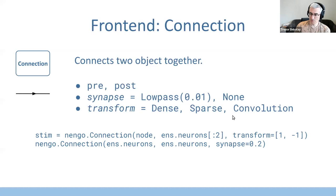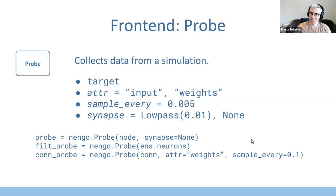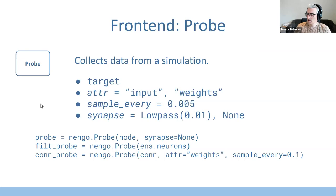You can do sparse connections through a sparse transform, build convolutional neural networks with a convolution transform, and use a shorthand — if you're using a low-pass synapse you can just pass in a float. A probe marks what parts of the simulation you want to gather data from. You pass it a target object, tell it what attribute to probe, and use the sample_every argument to define the sampling rate — critical for things like weights, which can overflow memory if sampled every millisecond.